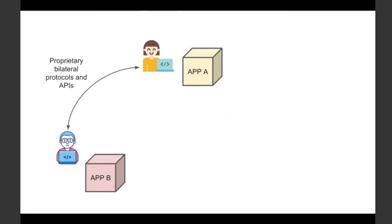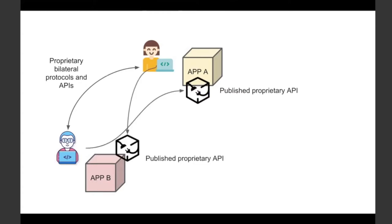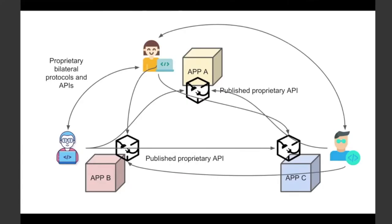An optimization to this is that an app may publish its own API that it makes more public, so a developer can discover that API, read the documentation, and implement it within their app in order to connect. This is a bit better, but it still requires discovery by developers as well as coding to a number of different APIs as the number of apps that want to interoperate grows. As you add more and more apps to the mix, you get an accumulation of interconnectivity that has to be done through different APIs.